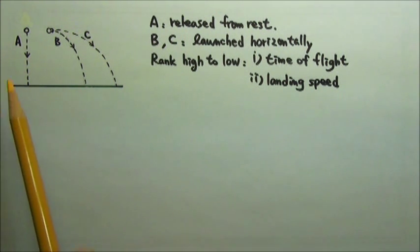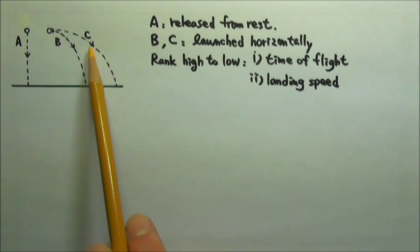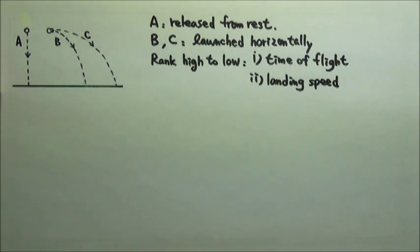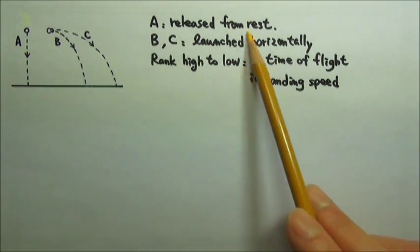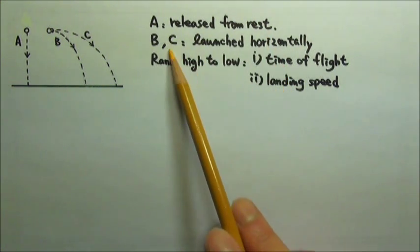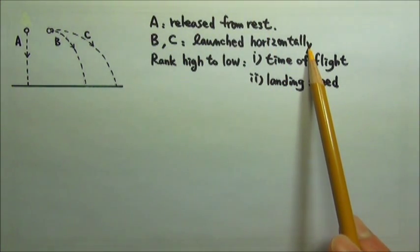This figure shows the path of three objects, A, B, and C, starting from the same height above ground. A is released from rest, while B and C are launched horizontally from the same location. Ignore air resistance.